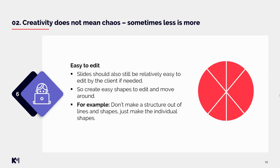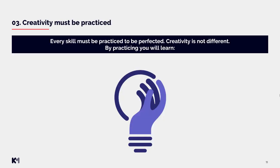Another important area: slides should still be relatively easy to edit by the client if needed. After we send slides to the client they might still need to adjust some text or move shapes around. So create shapes that are easy to edit and move. For example, don't make a structure out of lines and shapes combined — make individual shapes. What looked like six separate shapes forming a circle could actually be one circle with lines, which would be very hard for the client to edit. It is much more convenient to create that circle out of six separate shapes.